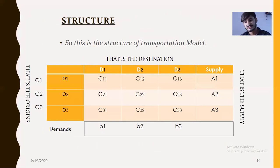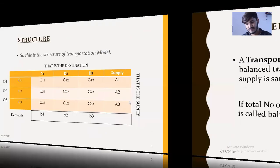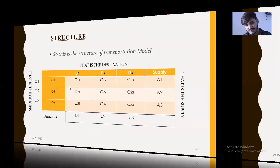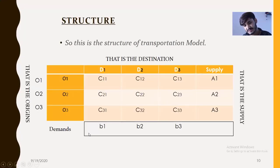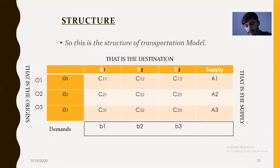Here is the structure of the transportation model. These columns are the origins, and these are the demands. Here are the supply values and these are the destinations.